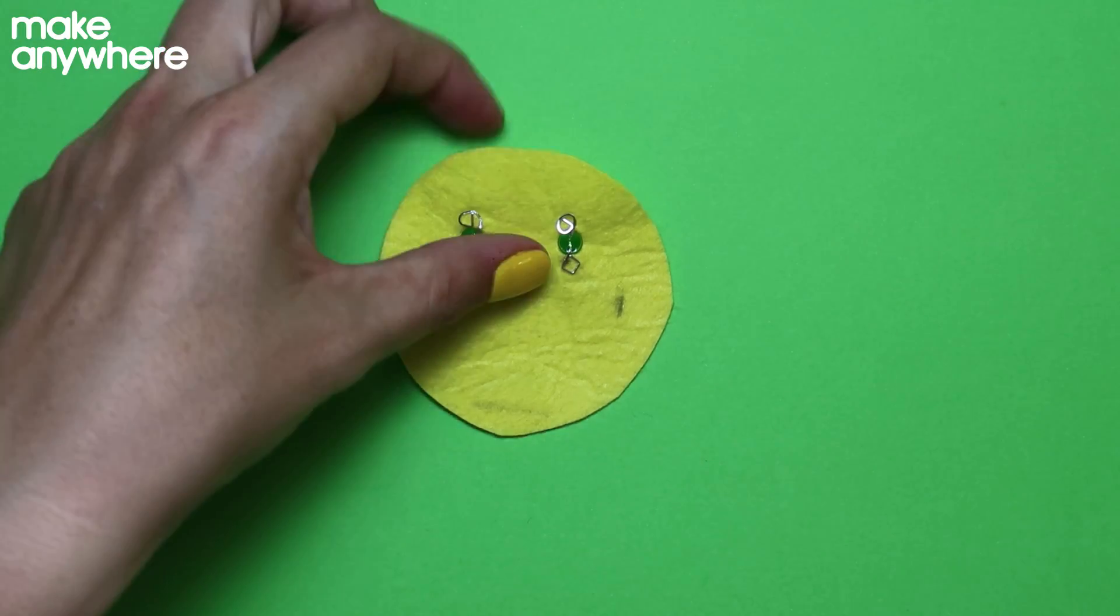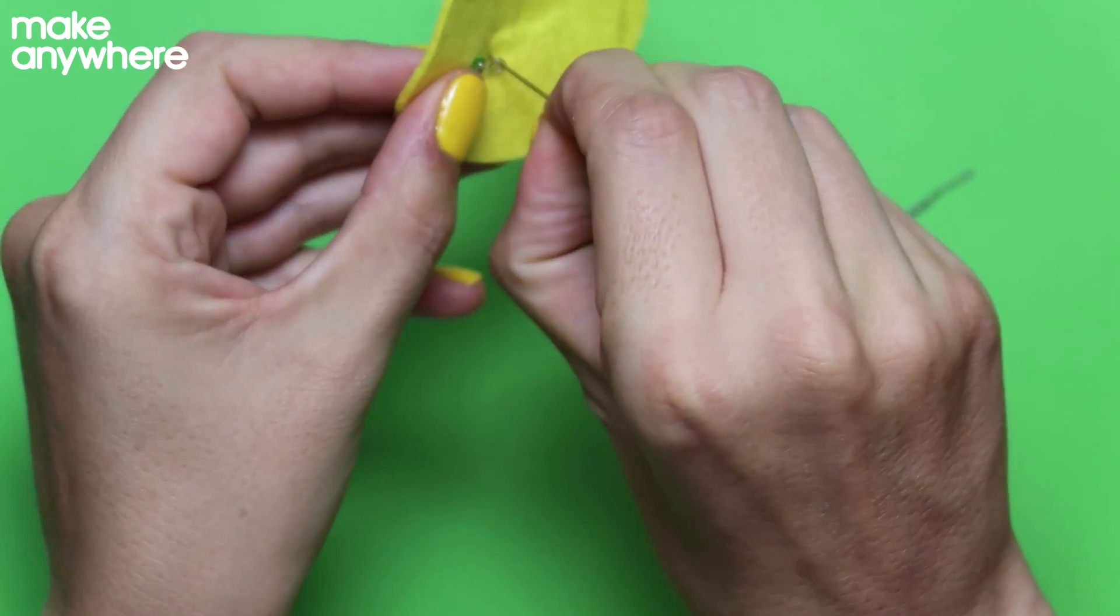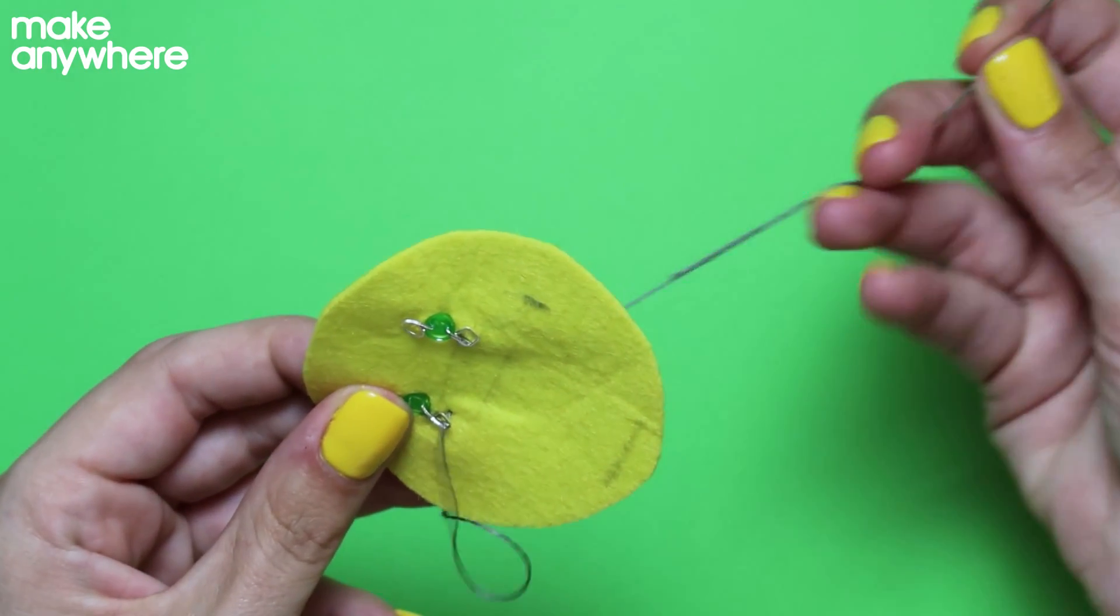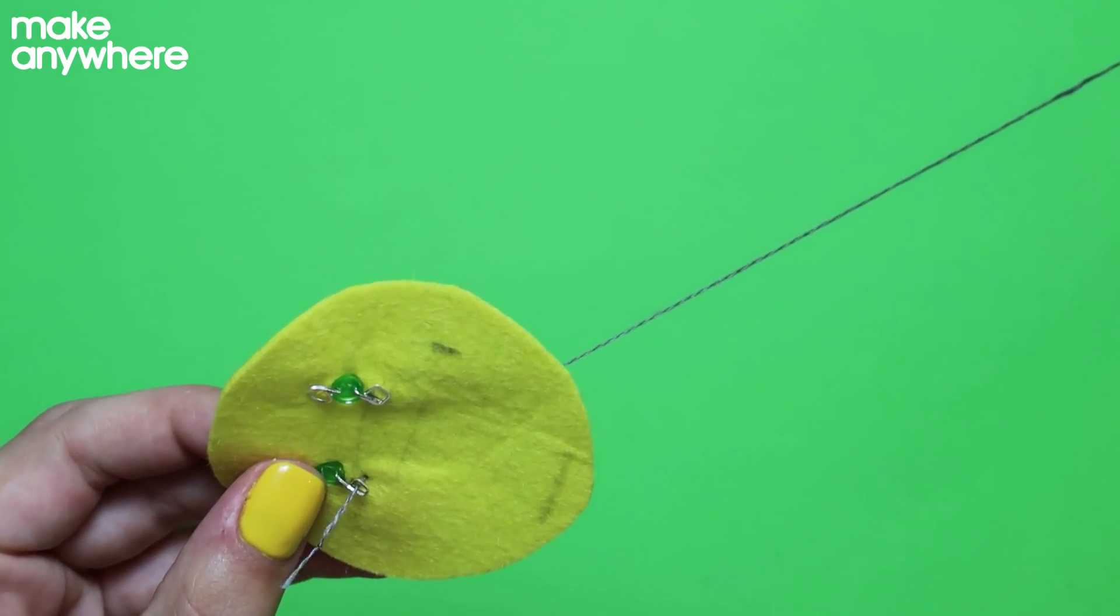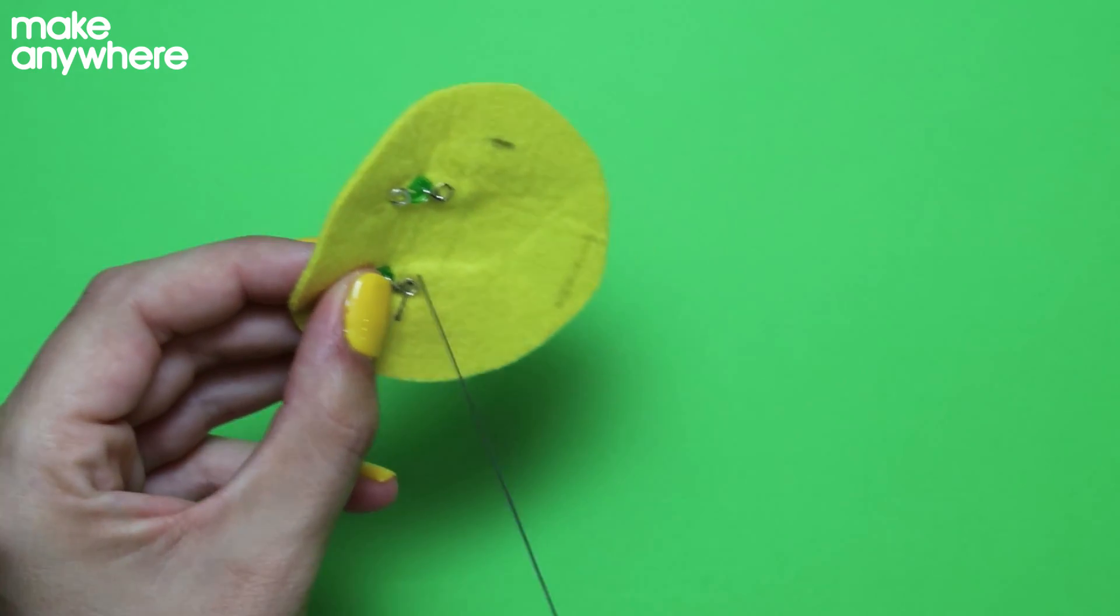And now we're going to start stitching. Go down through the negative square on the first LED. And you're going to go up, down and around three times. We want it nice and strong around the component.